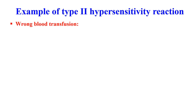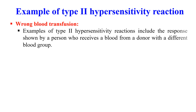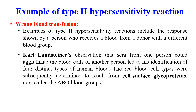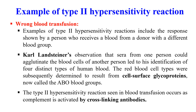An example of type 2 hypersensitivity is wrong blood transfusion. Karl Landsteiner observed that serum from one person can agglutinate the blood of another, which led to the blood grouping system. When a person receives blood of a different blood group, the reaction that occurs is a classic example of type 2 hypersensitivity, generally triggered as complement is activated by cross-linking antibodies.